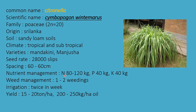Nutrient management: nitrogen 80 to 120 kg, phosphorus 40 kg, and potassium 40 kg per hectare; phosphorus and potassium applied in basal doses. Weed management is done by manual weeding only. Irrigation: twice a week. Yield is 15 to 20 tons per hectare, and oil extracted is 200 to 250 kg per hectare.